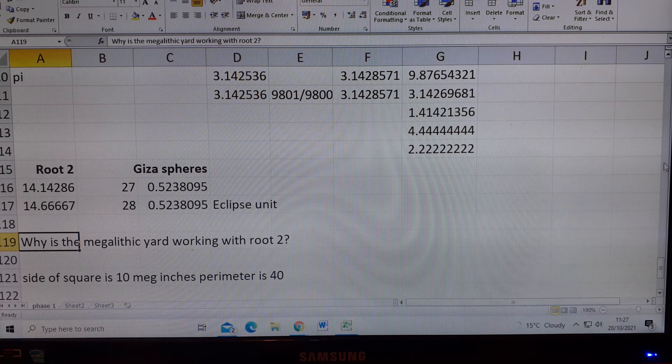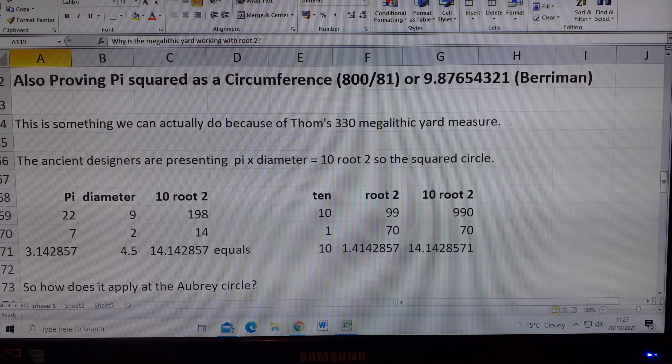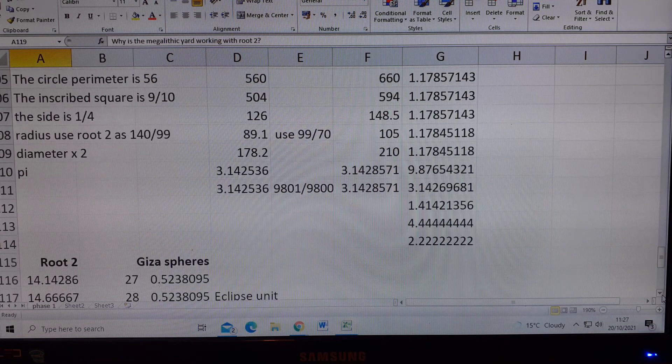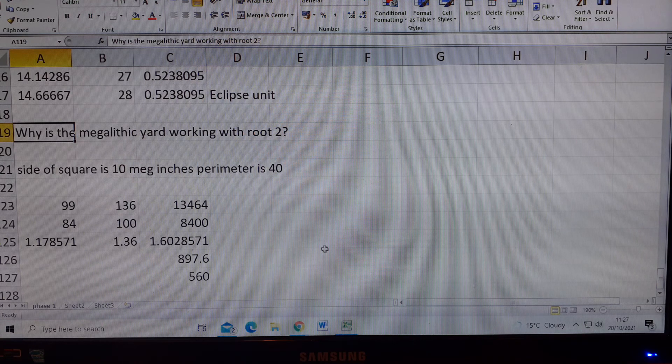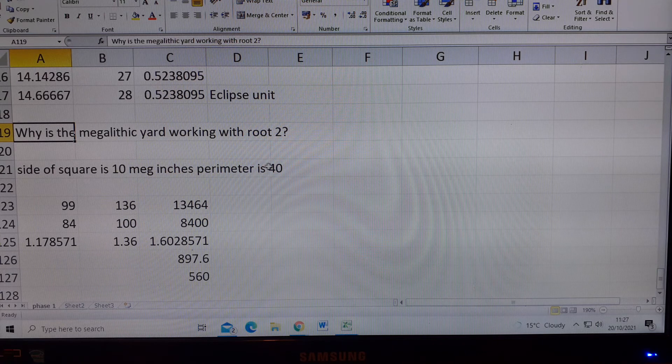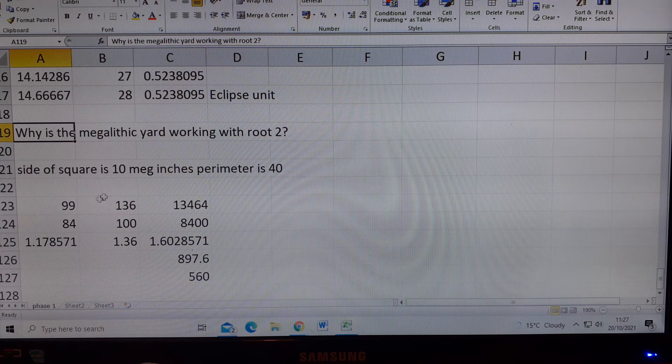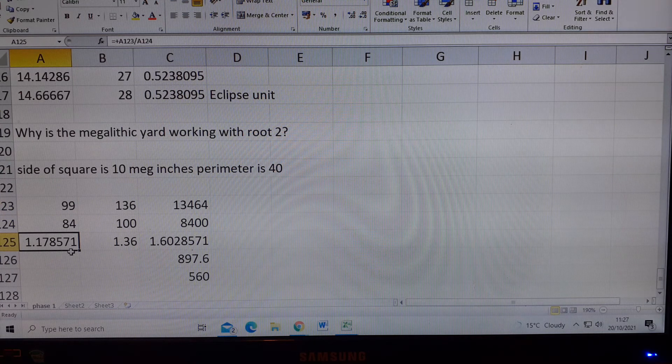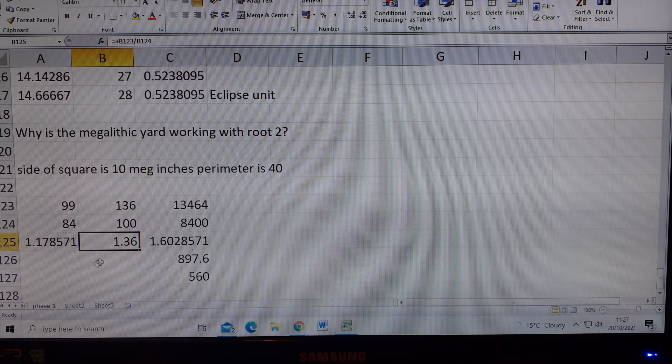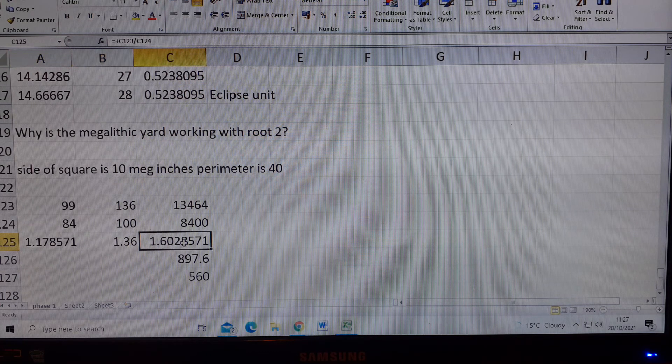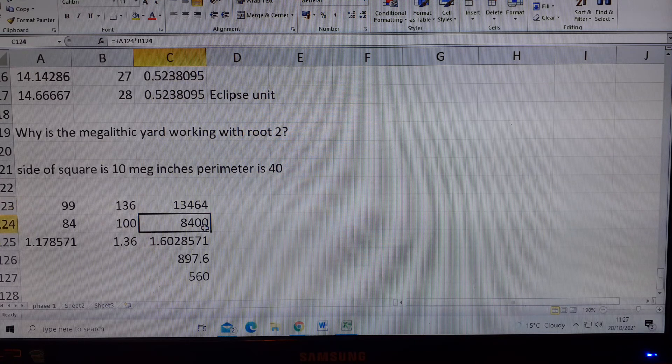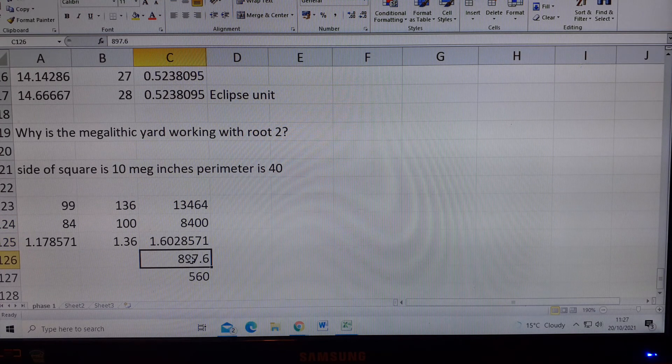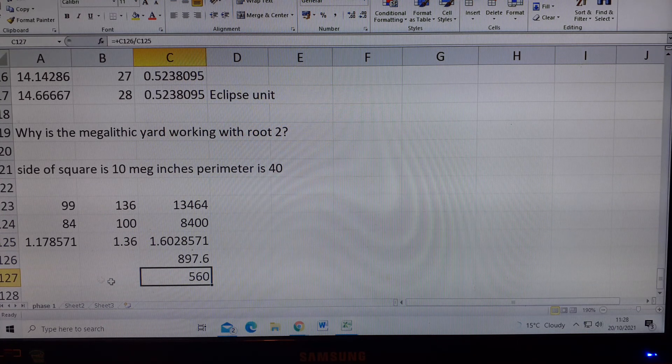And why is the megalithic yard working with root 2? We have to go down here to find out. The perimeter is 40 megalithic inches. The unit being used is 99 over 84, which is 1.178571, multiplied by 136 over 100, which is 1.36 inches. We multiply that by that, and we get this. It's 1.3464 divided by 8.400. When we divide that into 897.6, we get 560, and that's what I've used for proving the megalithic foot.